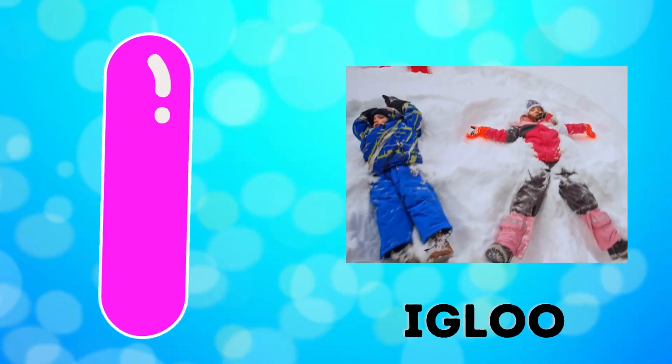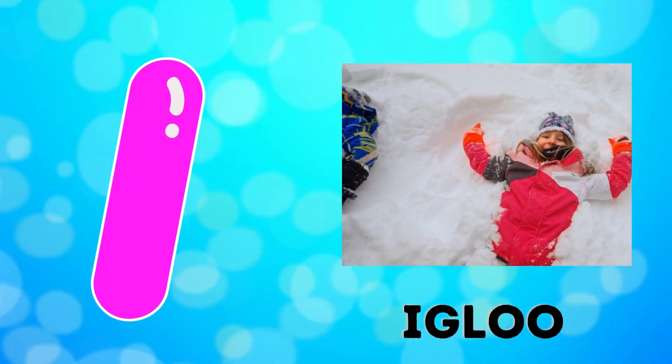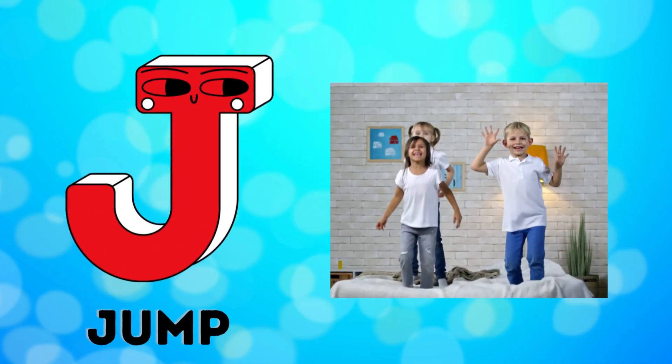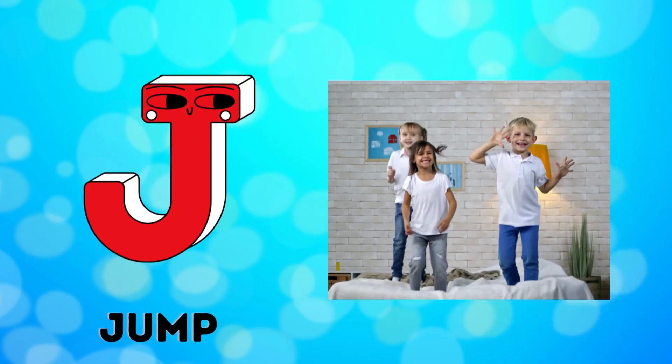I is for igloo, i-i-igloo. J is for jump, j-j-jump.